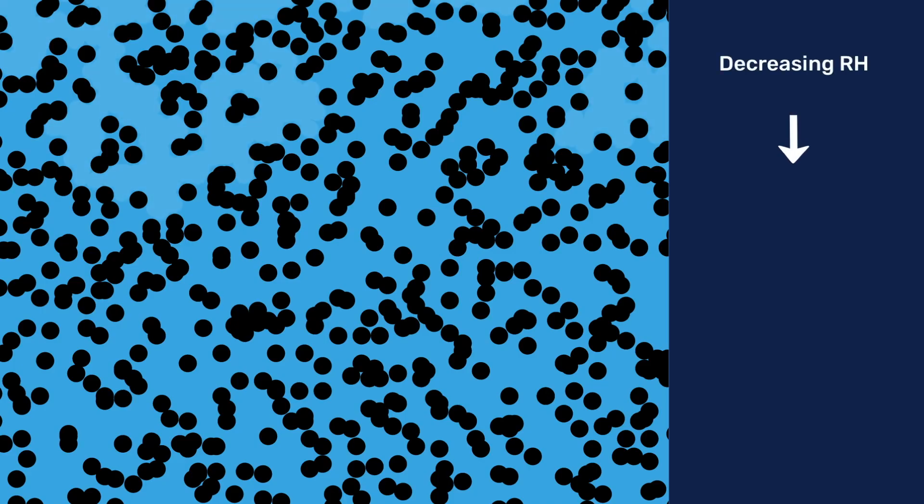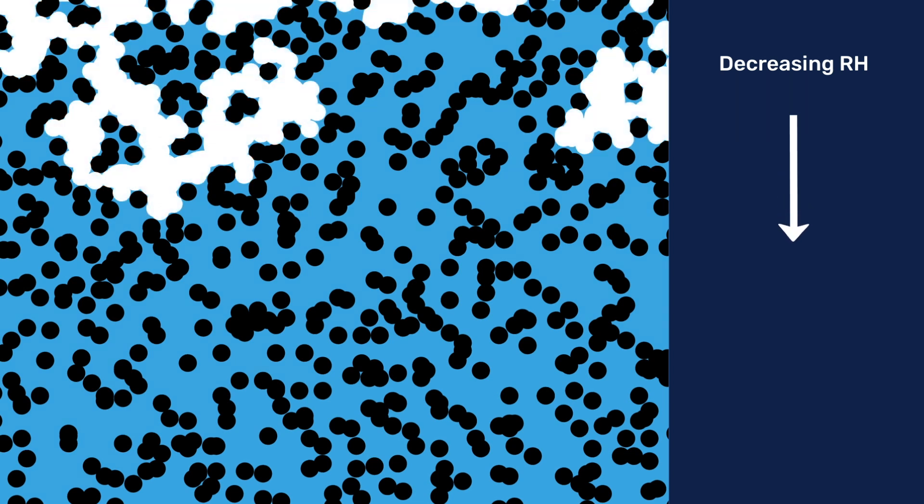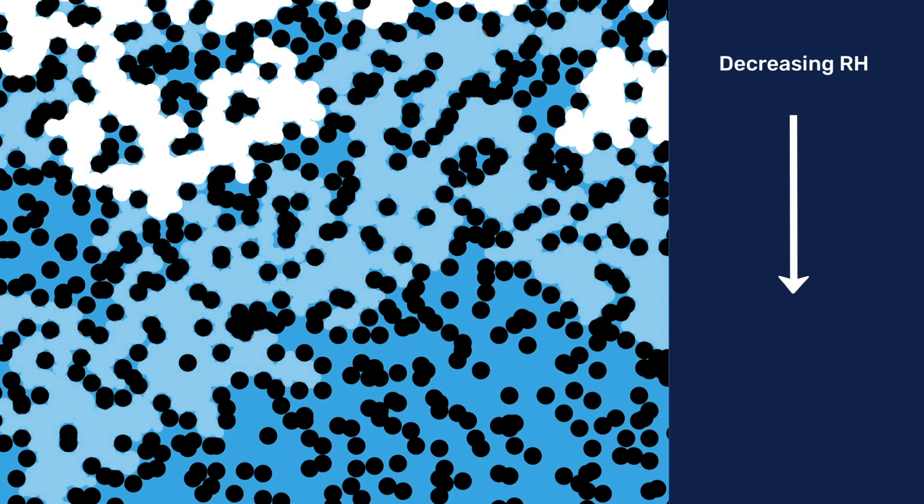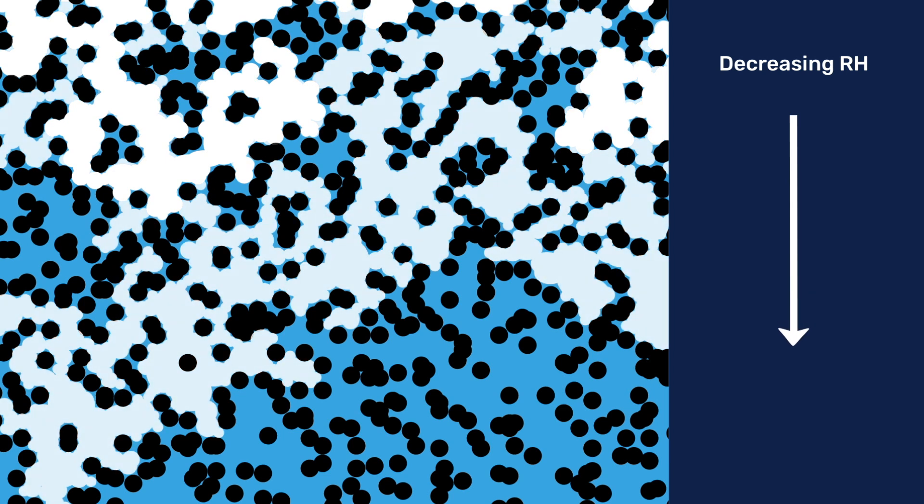Similar situations are encountered in most real porous materials, as these generally contain a network of interconnected pores with varying diameters. As already mentioned, some of these pores may remain filled with water until very low relative humidities and, along with the liquid film on the walls of emptied pores, transport water out of the material where evaporation mainly takes place.